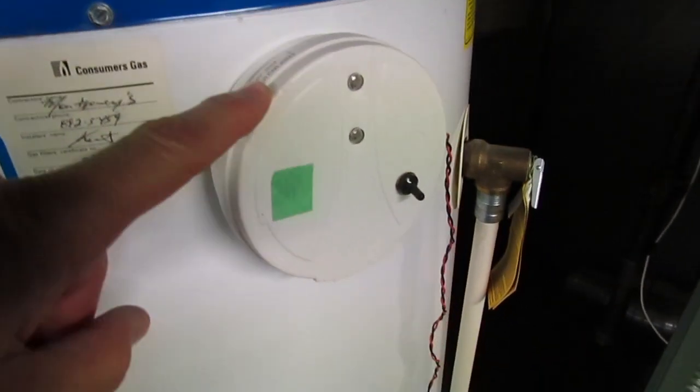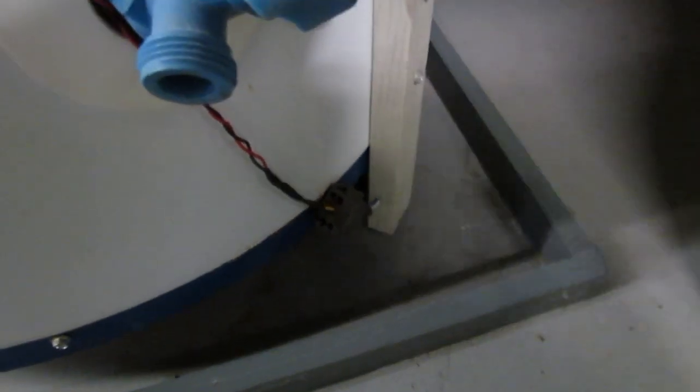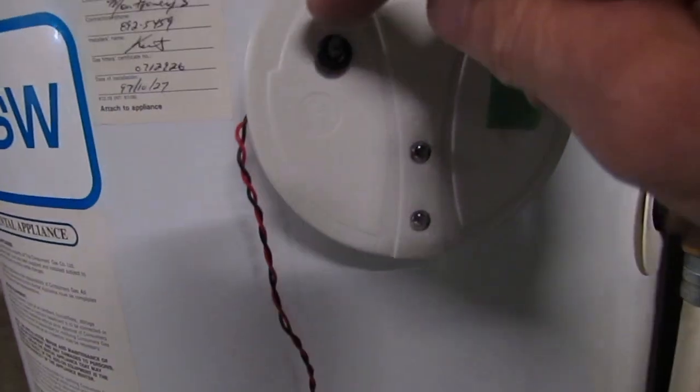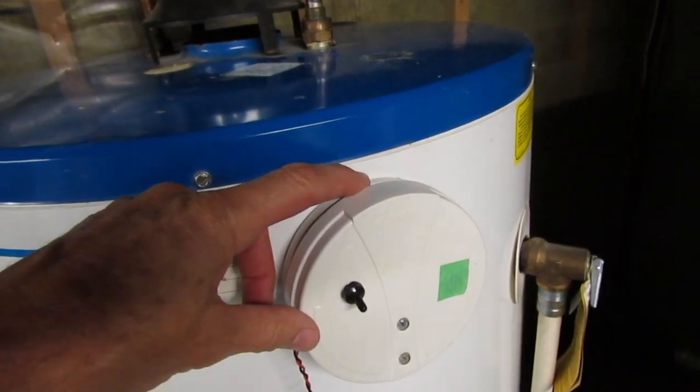And you may be wondering what this is. This is my do-it-yourself water heater alarm. It's made from a smoke detector and there's a couple of wires that go down there and when water hits the wires it sets it off. And if you're interested in how to make one the link will be at the end of this video.